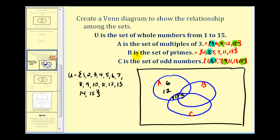Now let's place the elements of set B in the correct regions. Sets B and C share the common elements five, seven, eleven, and thirteen, so those four go in the region where B and C overlap. The only remaining element of set B is two, so two goes in the region belonging only to B.